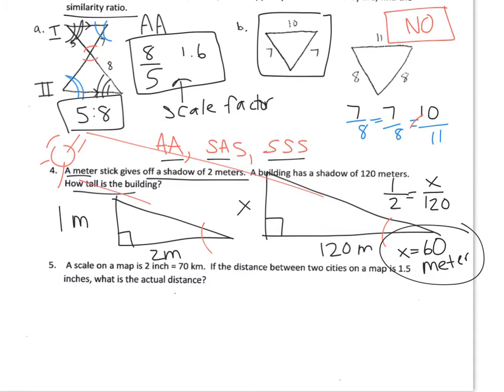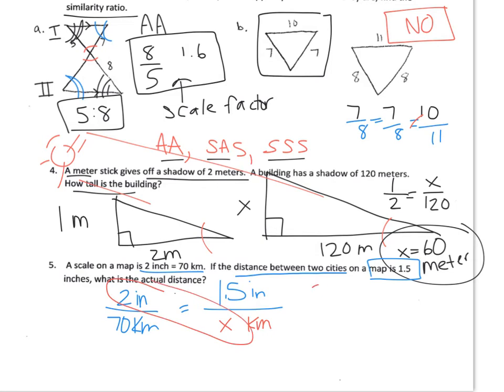And then number 5, a scale on a map is 2 inches is 70 kilometers. So 2 inches is 70 kilometers. Find the distance between 2 cities, so find the kilometers, when the map is 1.5 inches. So write 1.5 inches on the top because these two have to be the same units on the top. And then I'm going to write X kilometers. So again, you cross multiply. So 2X equals 70 times 1.5. So that is going to be 105. And then you divide both sides by 2. So X equals 52.5 kilometers.